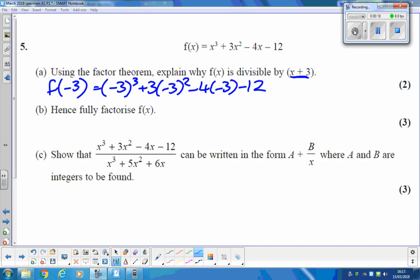Do work it all out, though, so we've got minus 27, add 27, plus 12, minus 12, and it equals 0. So, because it equals 0, x plus 3 is a factor. The words are needed there for that part.